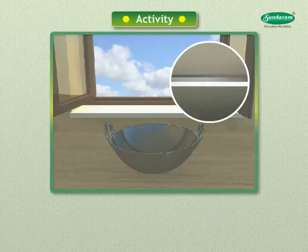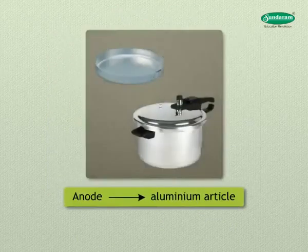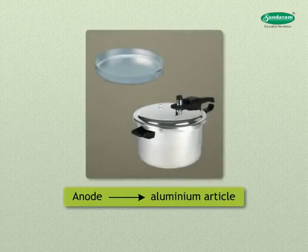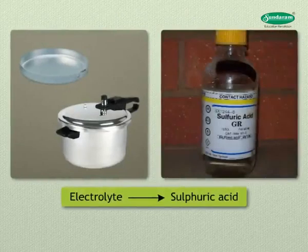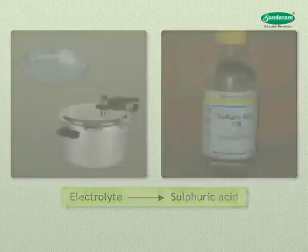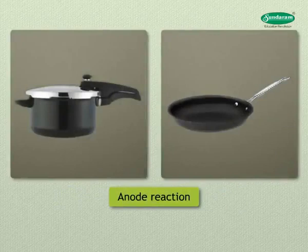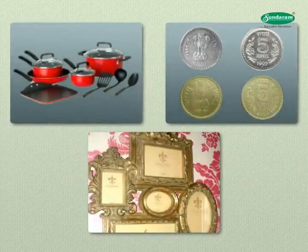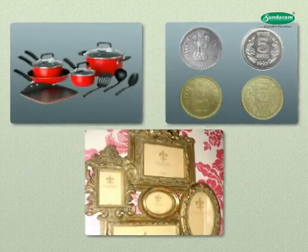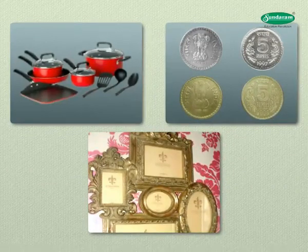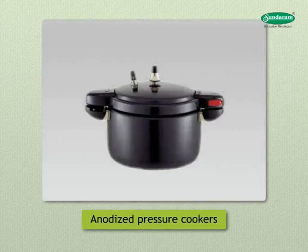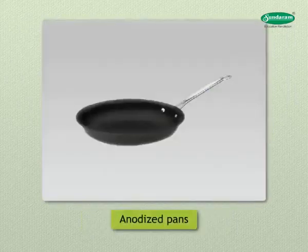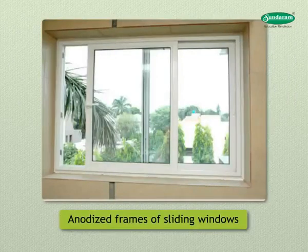The resistance can be improved by making the oxide layer thicker. In this technique, the aluminium article is used as the anode; the electrolyte used is dilute sulfuric acid. The anode reaction results in formation of a thin film of aluminium oxide on the surface. By putting appropriate dyes in the electrolytic bath, a colored surface with decorative finish can be achieved. Applications include anodized pressure cookers, anodized pans, and frames of sliding windows.